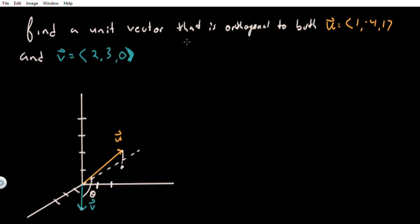So how do we find a vector that is orthogonal to two vectors? Well, we could use the cross product. We would have to find the vector u crossed with vector v. But then we'd have to divide it by its magnitude to find a unit vector. So let's do this computation.